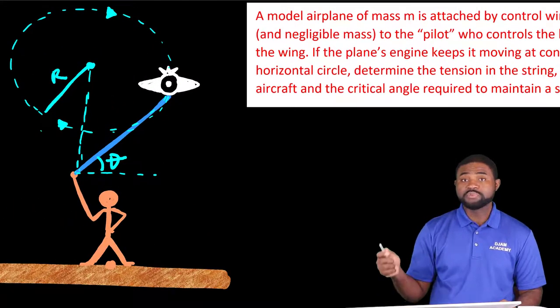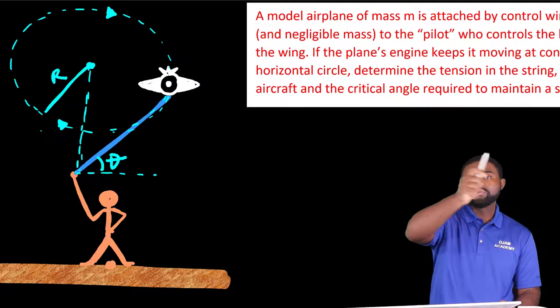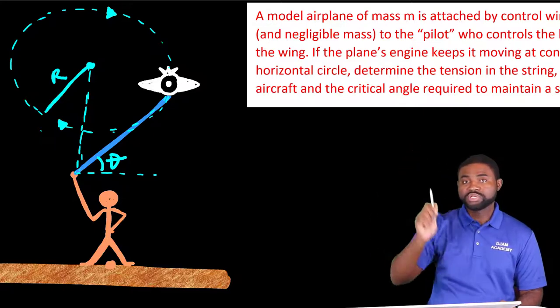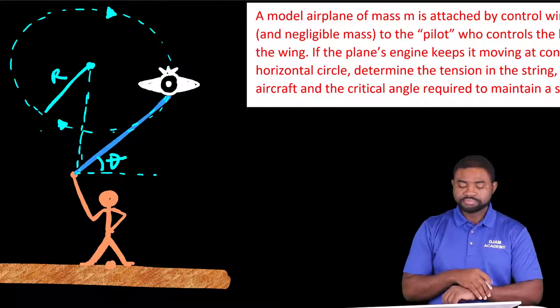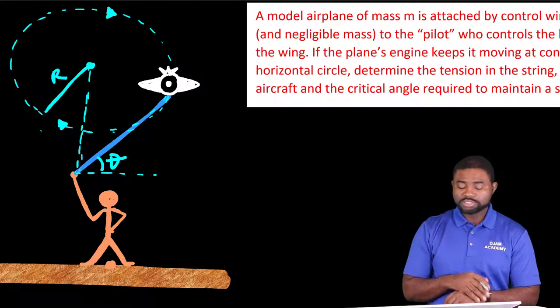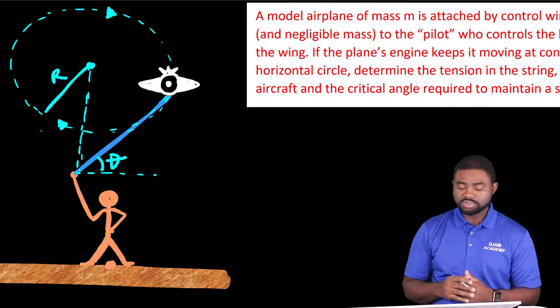So we have a plane flying around in a horizontal circle tied to a string held by a pilot. Let's start first by looking at the forces acting on the plane.